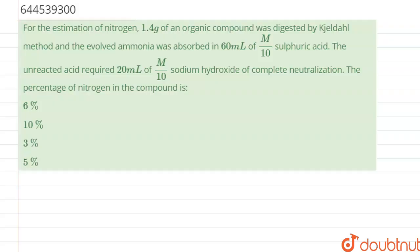Hello everyone, in this question we have been given: For the estimation of nitrogen, 1.4 gram of organic compound was digested by Kjeldahl method and evolved ammonia was absorbed in 60 ml of M by 10 sulfuric acid. The unreacted acid required 20 ml of M by 10 sodium hydroxide of complete neutralization. The percentage of nitrogen in the compound is: